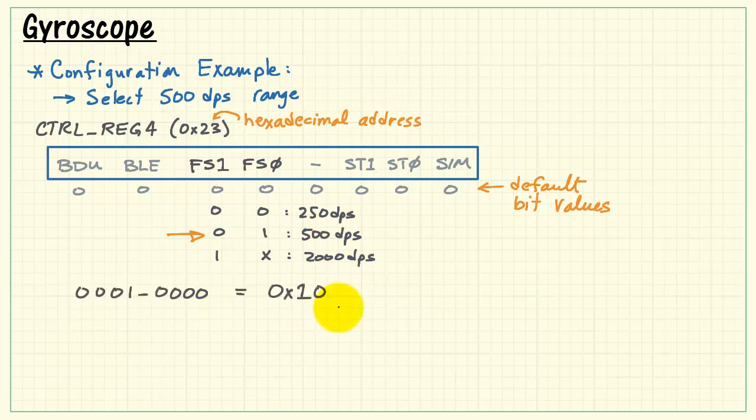Assembling the bit fields together into a hexadecimal value leads to hexadecimal 10. And that's what we write to control reg 4.